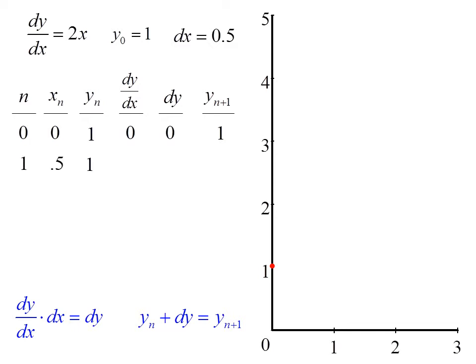So y sub n plus 1 is still 1. So after one iteration, x is moved over a distance of dx, or 0.5, and our new y value is 1. So we plot that point.